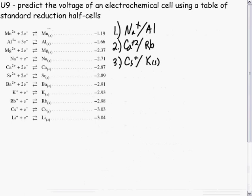The sodium ion aluminum, calcium ion rubidium, and cesium ion potassium half cells, one, two, and three, predict the voltage for each cell.